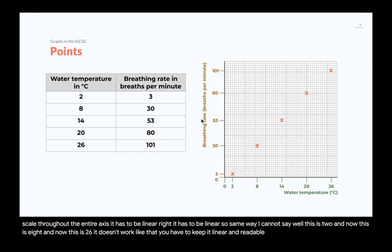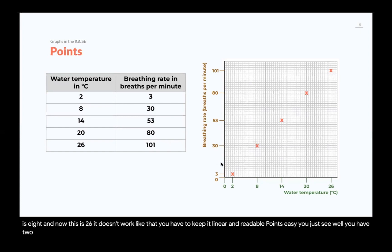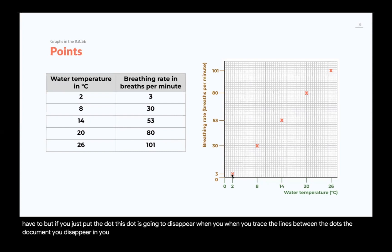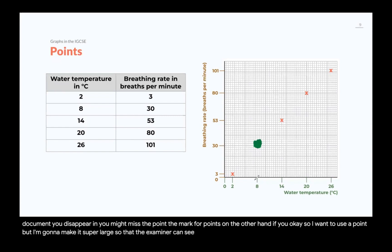Points. You just plot the points. Easy. You just see, you have two, you have three, find the two, find the three, mark with an X. It would be great to mark with an X. They don't say that you have to, but if you just put the dot, this dot is going to disappear when you trace the lines between the dots, the dots are going to disappear, and you might miss the point, the mark for points. On the other hand, if you want to use a point, but I'm going to make it super large so that the examiner can see, well, this is horrible because it takes up so much space that you can't tell that it is exactly here, the 8 and the 30. So, it's not good.